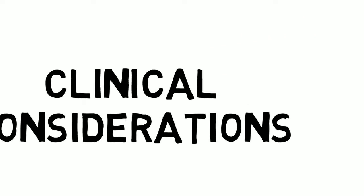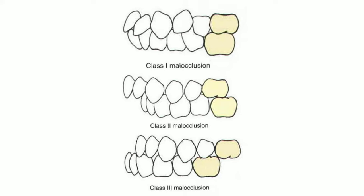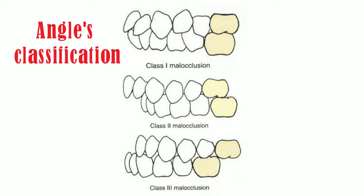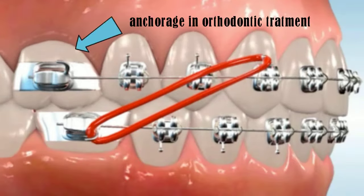For clinical considerations, the maxillary first molar along with the mandibular first molar is used to classify malocclusion according to Angle's classification. Due to its three strong roots, the maxillary first molar is used as an anchorage in orthodontic treatment.